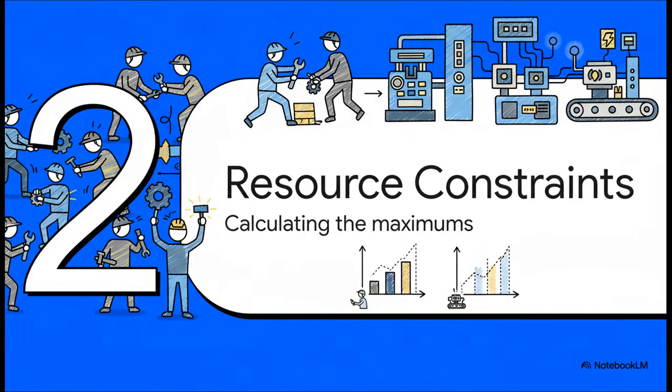Now, for the fun part. Before we figure out what we can produce when we combine everything, let's see what the limits would be if we only had one type of resource to worry about. We're going to calculate the absolute maximums for workers and machines completely separately.